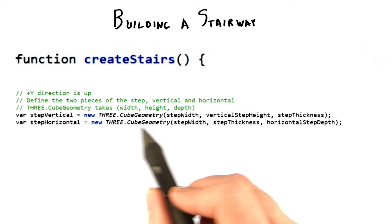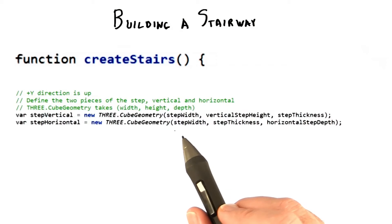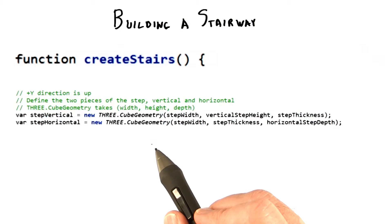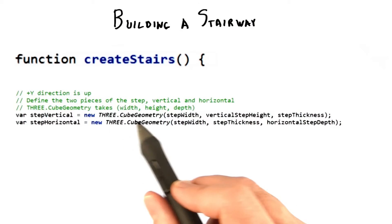Here's the code for defining the geometry for our two steps. The way cube geometry works is that you provide it a size in x, y, and z. It then creates a set of triangles for you, forming a box with these dimensions.